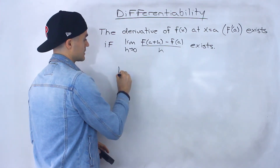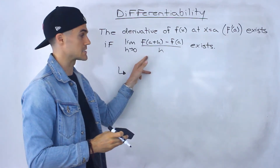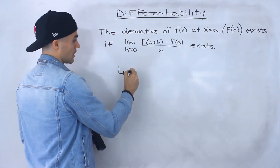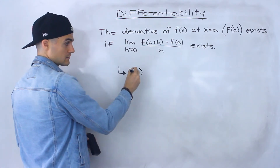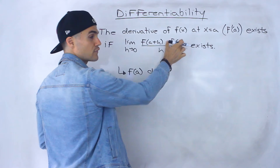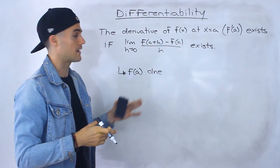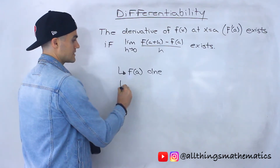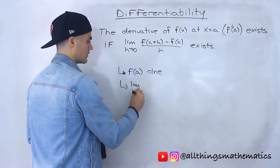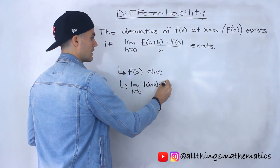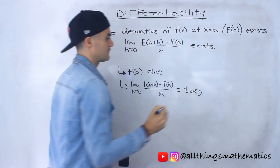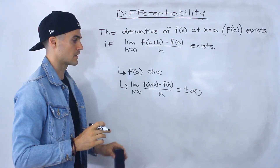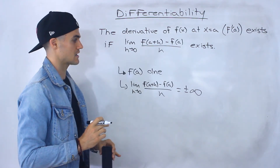Based on those cases, we're going to be showing that this limit here basically doesn't exist. There are different ways to show that this limit doesn't exist. One case is that f of a isn't going to exist — the function isn't even defined at that x value — and if f of a doesn't exist, then that whole limit isn't going to exist. Another case is if the limit approaches plus or minus infinity, so it's not going to approach a certain number, and so the derivative doesn't exist at that x value.